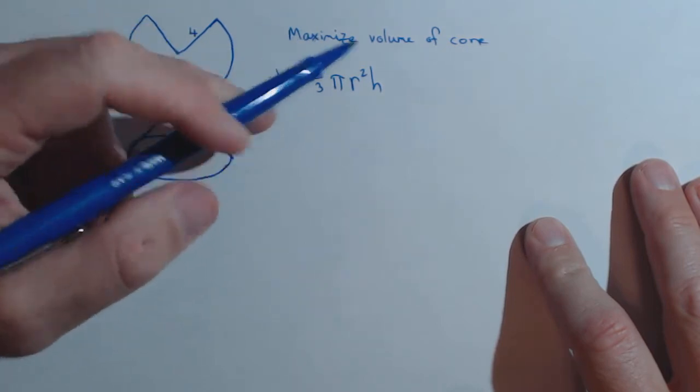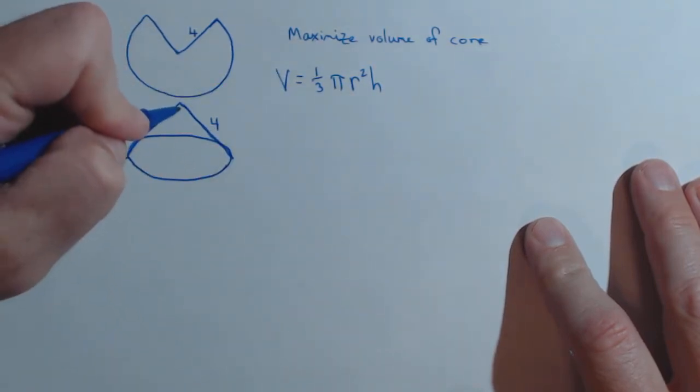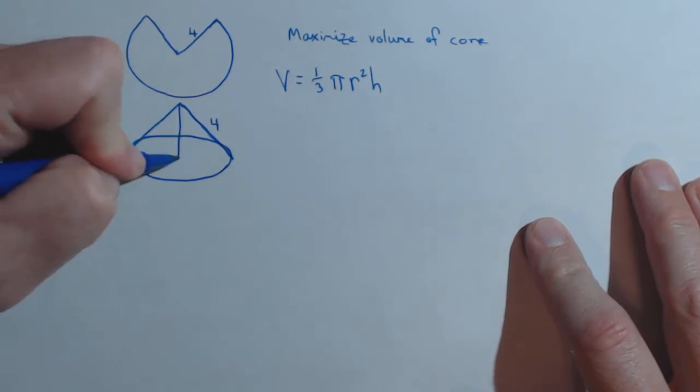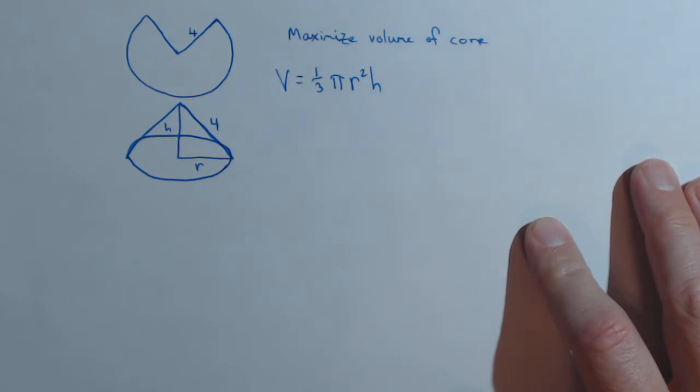Now, the second thing we want to do is get this in terms of one variable. Well notice that we have that being 4. If we drop in the radius and the height of our cone here,